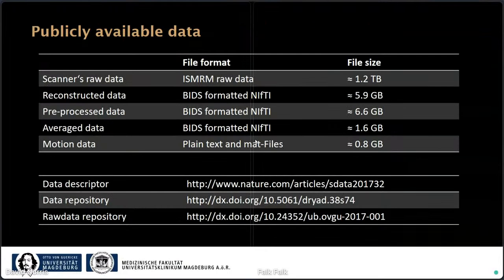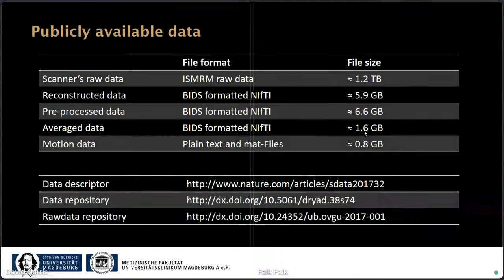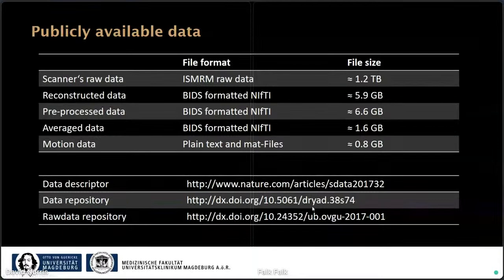We make quite a large amount of data publicly available. The scanner raw data is available in the ISMRMRD raw data format at about 1.2 terabytes in size; the reconstructed and pre-processed data are each about 6 gigabytes; the average of all eight single volumes is about 2 gigabytes; and the motion data from the tracking system is about 1 gigabyte. Alongside the data we published a data descriptor in Nature Scientific Data. The data repository is available via Dryad, and the raw data is at our university's data repository.